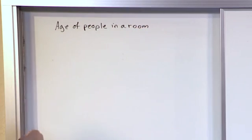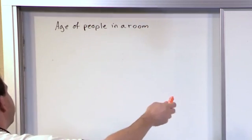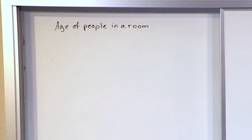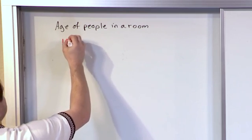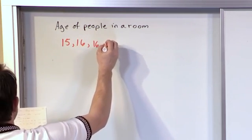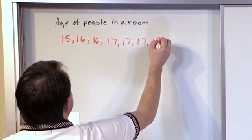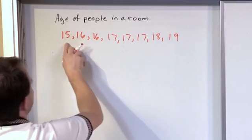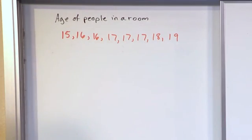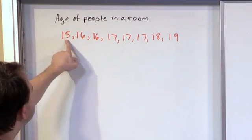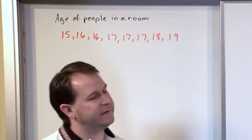We go to a party or something, and we ask everybody how old are you? We get the following data set: 15, 16, 16, 17, 17, 17, 18, 19. So we have eight people in our birthday party, and we have one 15-year-old, two 16-year-olds, three 17-year-olds, one 18-year-old, one 19-year-old.